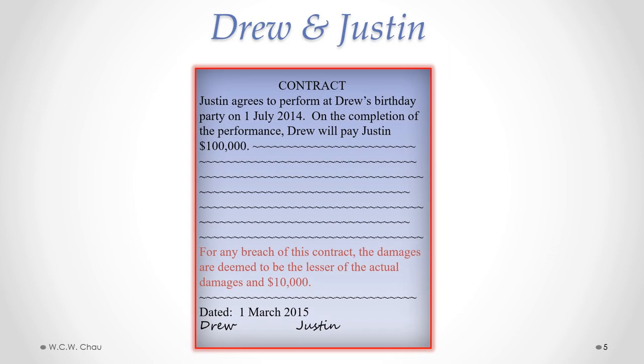Here is the contract between Drew and Justin. This is a simplified version of a liquidated damages clause. It says that if there is a breach of contract, the damages are deemed to be the lesser of the actual damages and $10,000. The effect of that is to cap the maximum amount of damages for a breach of contract to $10,000.